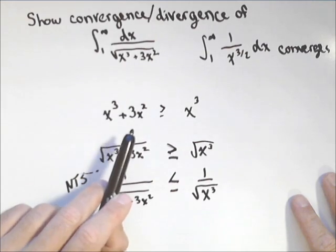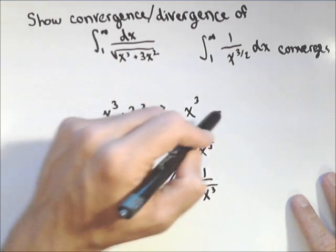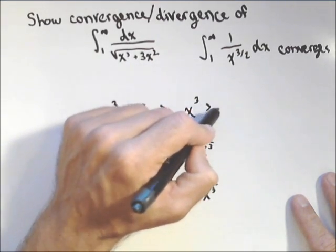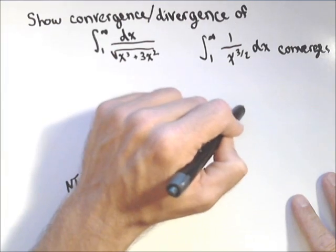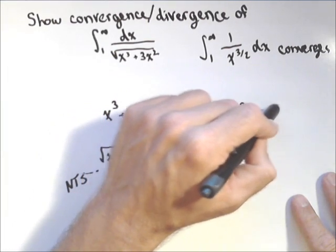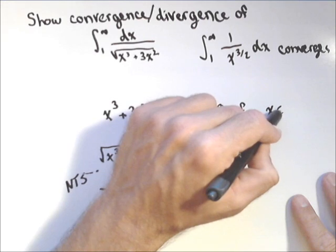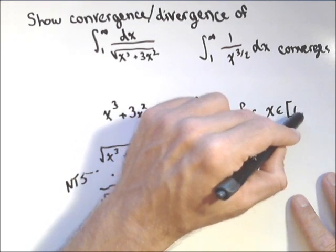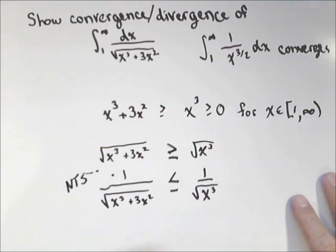So what we've gotten back to is a pretty obvious statement. So it's greater than x cubed, which is greater than or equal to zero, for x in one to infinity, which is all we need to check, because that's the interval of our function.